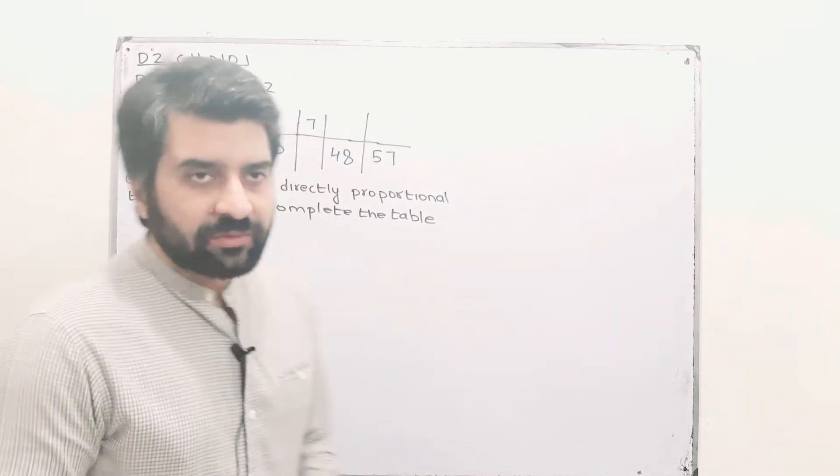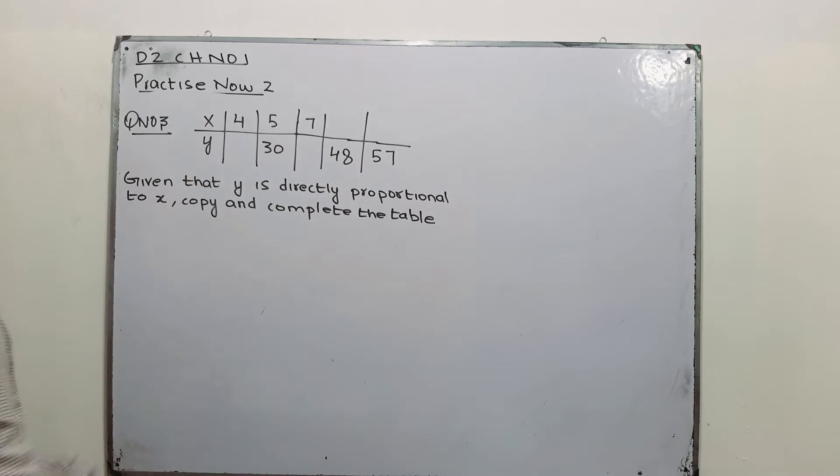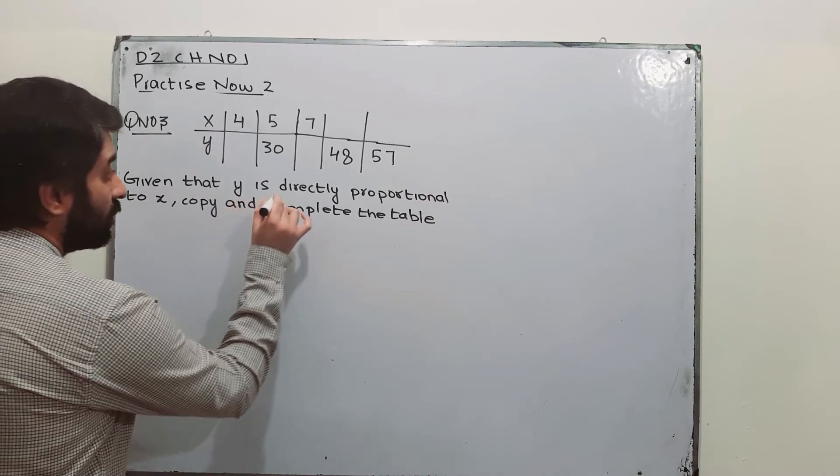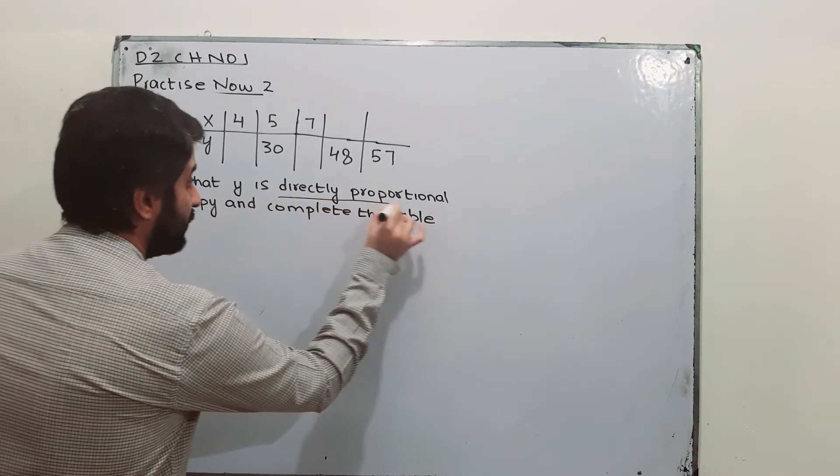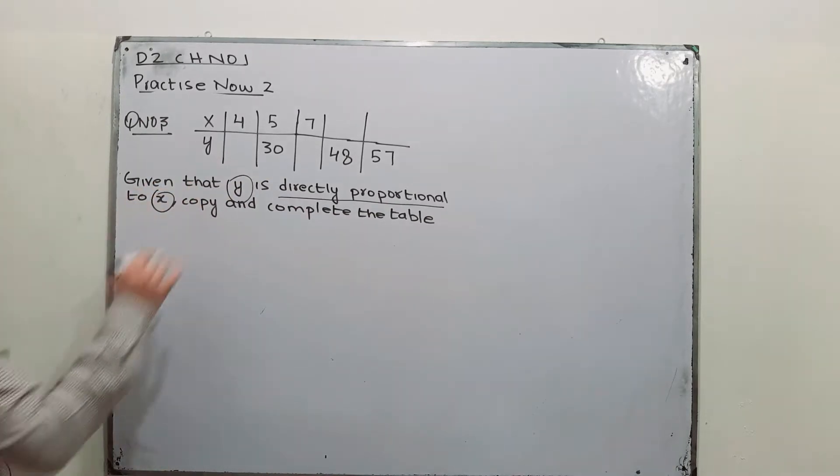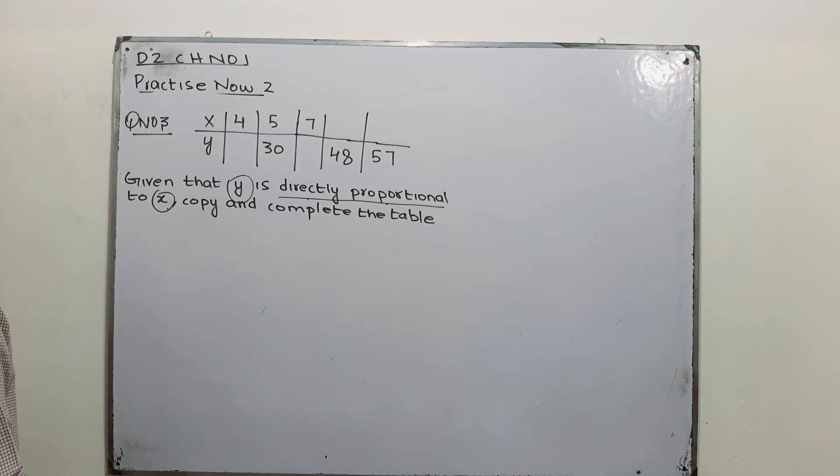Well, we have been given a table. Here we have a table and you have to complete this table. So first of all, you need to look out for the relationship between Y and X. Y and X, they are directly proportional.